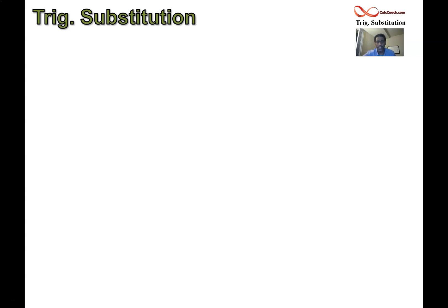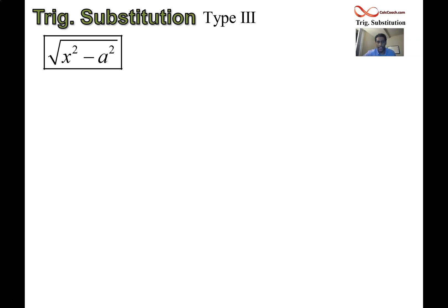Welcome to this trig substitution concept video regarding the third type. We've seen the concept video for the first type, which is a squared minus x squared under the radical with x equal to a sine theta, and the second type with a plus in between. Now we're going to look at the third type where it's x squared minus a squared. We'll see why we choose the certain trig sub, how it works, and in the next video we'll have an example.